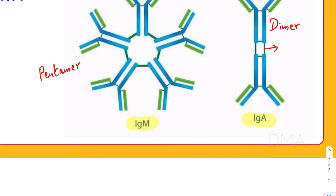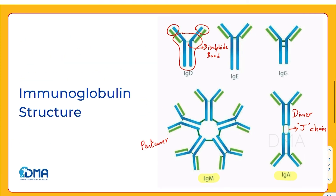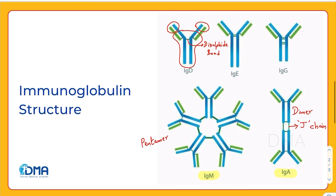These are held together by a chain called the J-chain, and that would be the important topics about immunoglobulin structure. Thank you for watching.